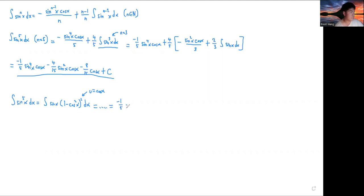You get a value of negative 1 over 5 sine 4 x cos x minus 4 over 15. After doing that, if you were to just do it with this method here, this method, where you said your u was cos x, you would get, this is equal to negative 1 over 5 cos 5 x plus 2 over 3 cos cubed x minus cos x plus c. But I assure you that these two formulas are the exact same thing.